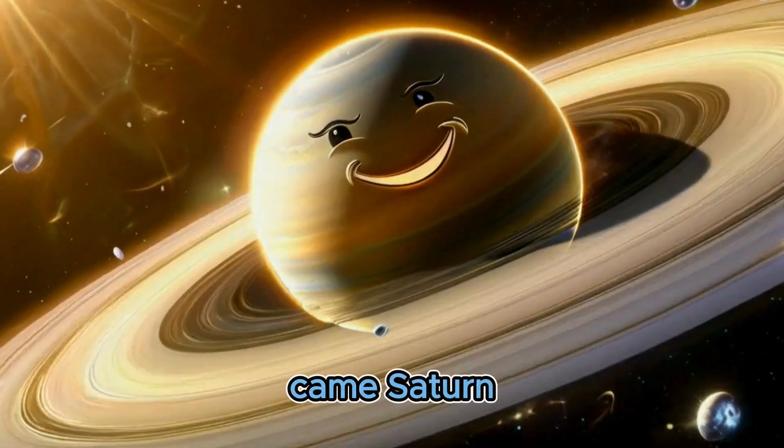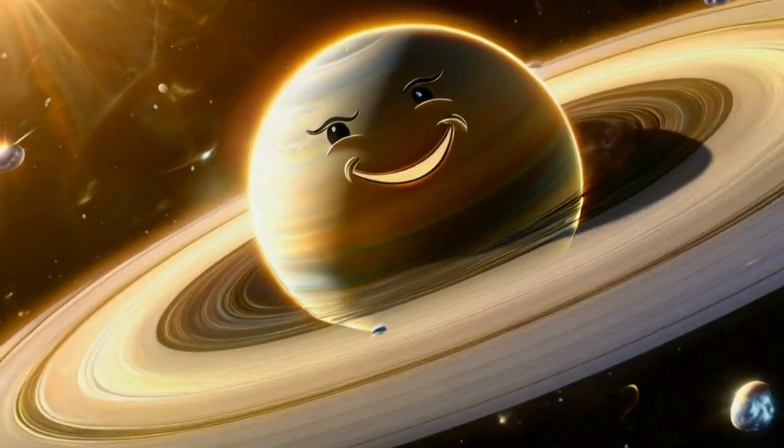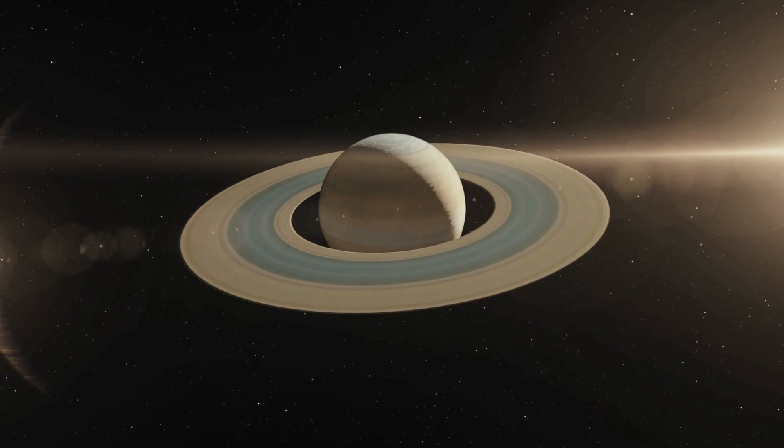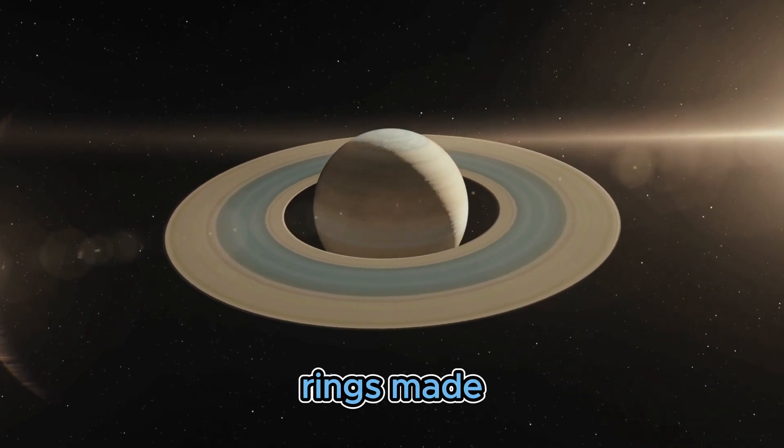After Jupiter came Saturn, with its shiny rings. Saturn twirled and danced, showing off its beautiful rings made of ice and rocks.